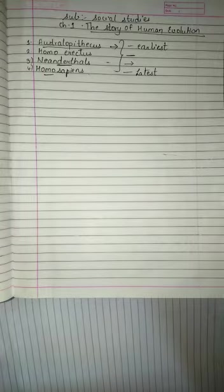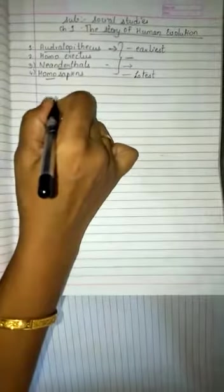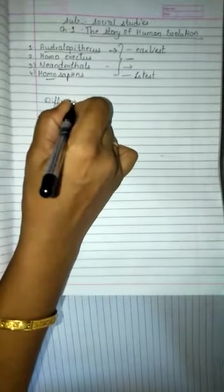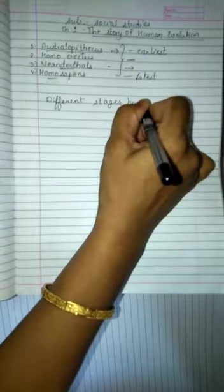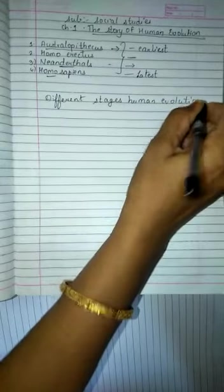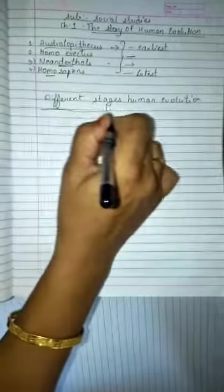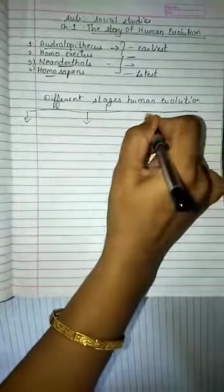Now we have seen all the four stages of evolution. Let us take a quick look at the different stages of human evolution. Human evolution is divided into four stages.